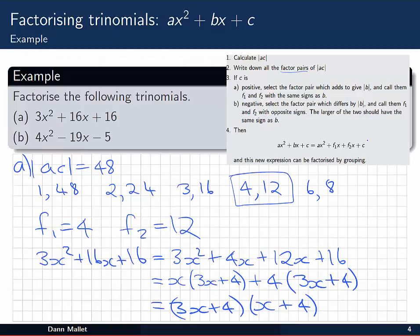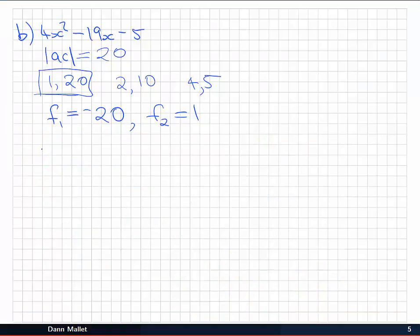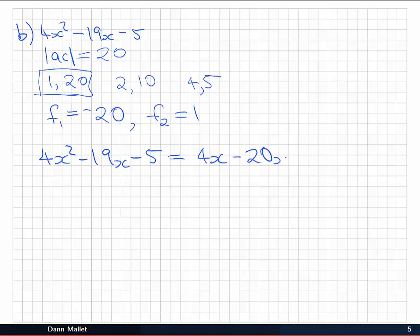Then again we're going to want to write out our quadratic in this form. So we have 4x² - 19x - 5 is equal to 4x² - 20x + x - 5.